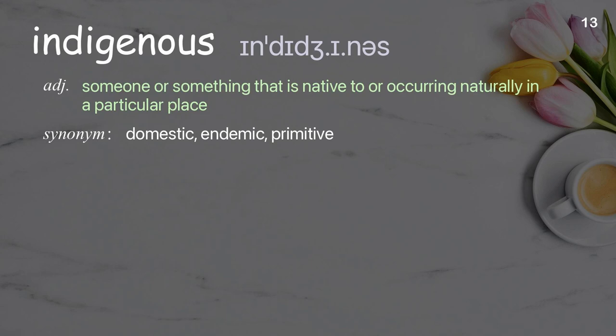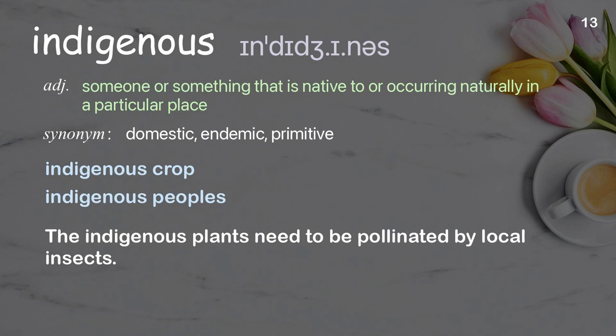Indigenous: Someone or something that is native to or occurring naturally in a particular place. Examples: indigenous crop, indigenous peoples. The indigenous plants need to be pollinated by local insects.